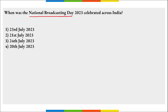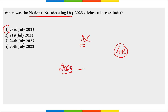On 23rd of July, we observe National Broadcasting Day to commemorate the establishment of the Indian Broadcasting Company in Mumbai, Maharashtra. IBC was later renamed to All India Radio. In 2023, it was the 96th anniversary of All India Radio, formerly known as IBC.